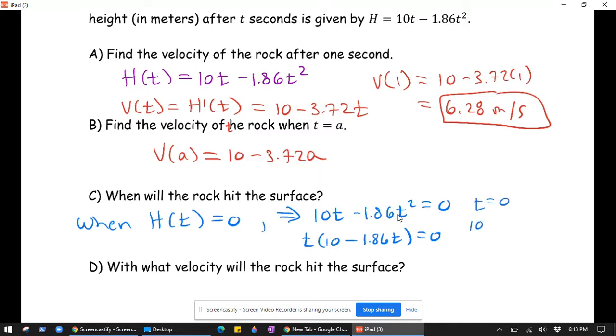So that tells us that t equals 0, or also 10 minus 1.86t equals 0. And then solving this for t, I believe gives us about 5.376 seconds.